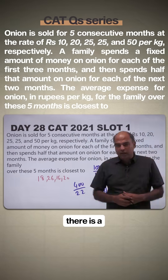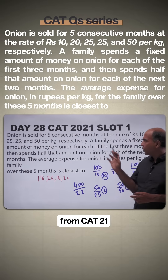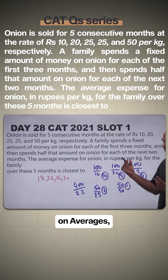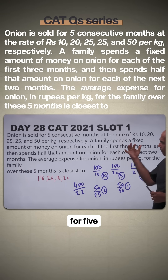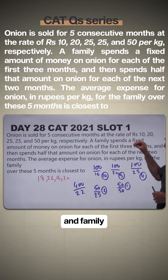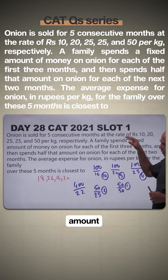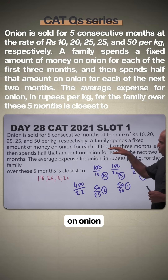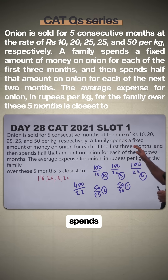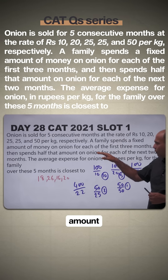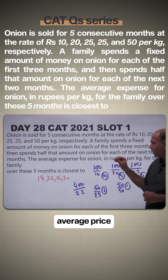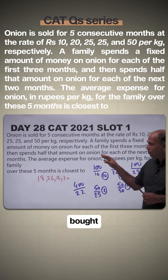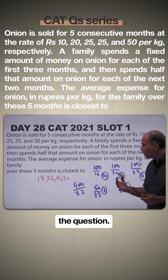Day 28 of solving CAT questions in under 60 seconds. This question is from CAT 2021 Slot 1 on averages. Onion is sold over five months at given rates, and a family spends a fixed amount of money on onion for each of the first three months, then spends half that amount for each of the next two months. What is the average price of onion bought over these five months?